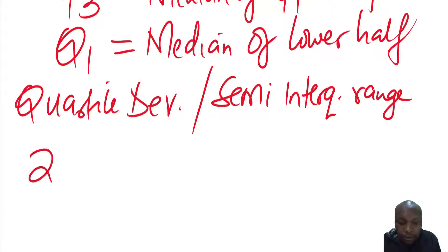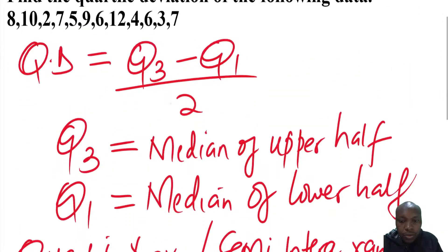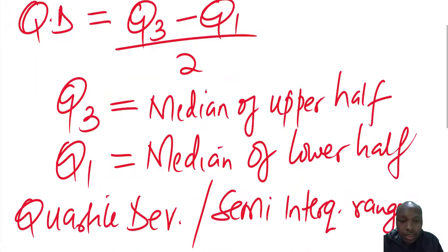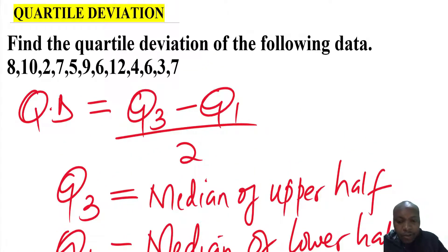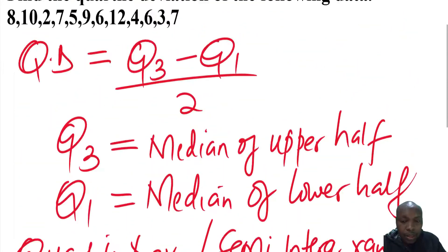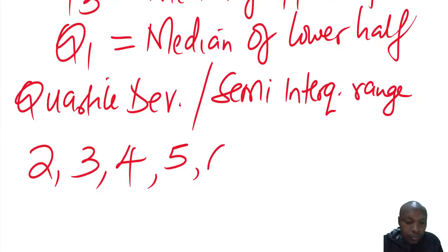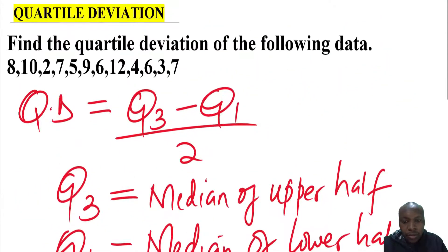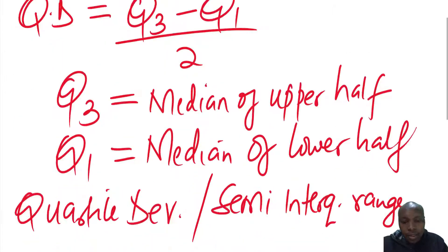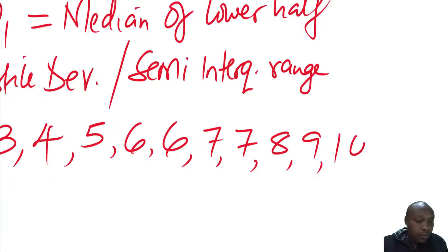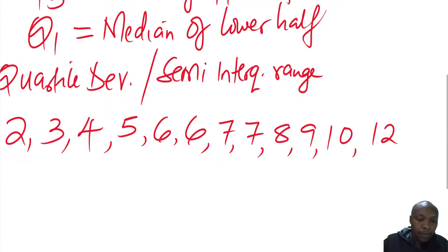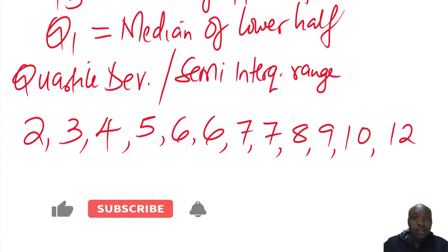So arranging, we get 2, 3. Then we have 4. Then we have, when I look at the value, 5 is 1. Then 6 is 2. Then I can see 7. There are also 2. Then from there you have 8, 9, 10, 12. So as you can see, we have now arranged the set of data in ascending order.